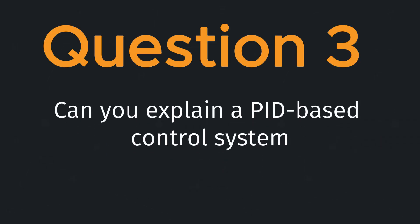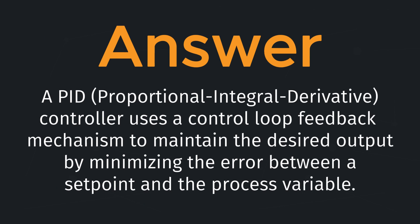Question three: can you explain a PID-based control system? A PID — proportional integral derivative — controller uses a control loop feedback mechanism to maintain the desired output by minimizing the error between a set point and the process variable.